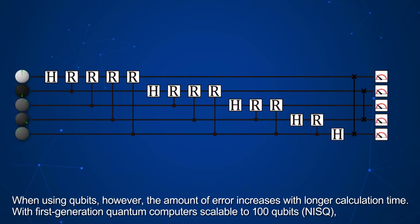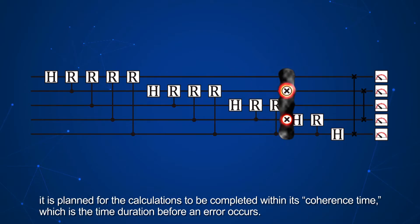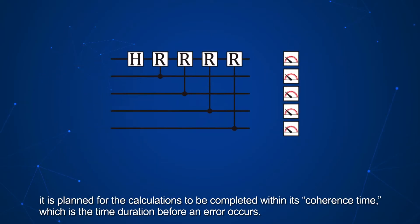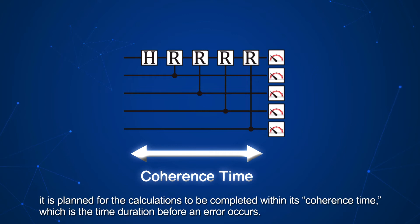When using qubits, however, the amount of error increases with longer calculation time. With first-generation quantum computers scalable to 100 qubits, NISC, it is planned for the calculations to be completed within its coherence time, which is the time duration before an error occurs.